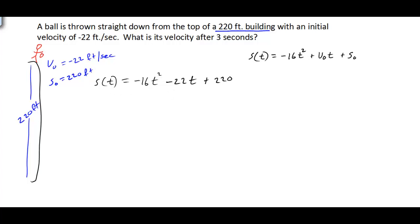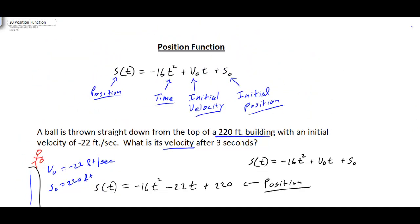We have our position function, and given some time t, we can locate where the ball is after that time. The question asks for the velocity. We can find velocity by taking the derivative of our position function: if S of t is the position function, then S-prime of t gives us v of t, the velocity.